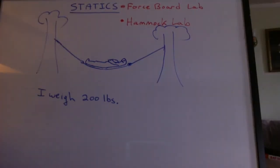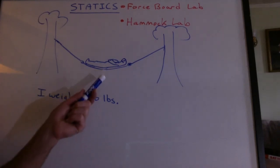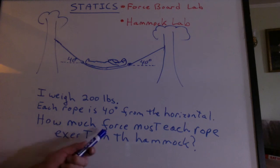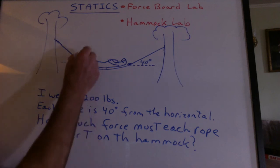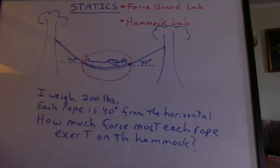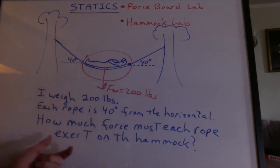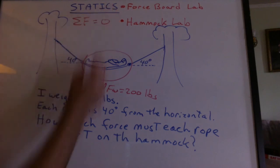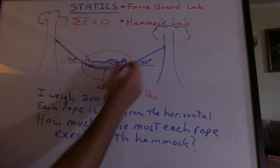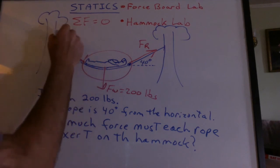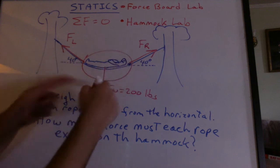We're ready to try a problem. I weigh about 200 pounds. That's supposed to be me in a hammock. I know, it looks more like an embryo. Now we can say each rope is 40 degrees from the horizontal. How much force must each rope exert on the hammock? The first thing you should ask yourself is, does the hammock move? This whole thing, me and the hammock all together, we will assume, weighs 200 pounds. It's not falling. So what does that tell us? It's static. That means the sum of the forces is equal to zero. These are the outside forces. All three of these forces have to add up to zero.